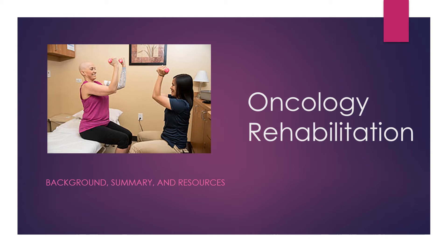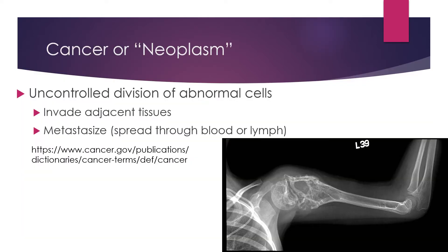The last thing I'm going to talk about in this class, this semester, is oncology rehabilitation. Let's define briefly what exactly cancer is. Cancer is also called neoplasm and is an uncontrolled division of abnormal cells. Sometimes this can be very aggressive, very fast-growing, and they invade adjacent tissues — that's where the name cancer comes from — or they can grow by metastasizing, that is, spreading through the blood or lymph.